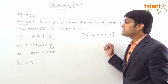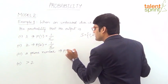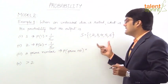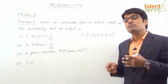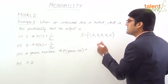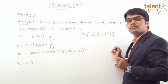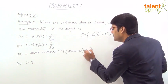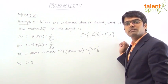Next, what is the probability that the output is a prime number? We look at the sample space to find how many outcomes favor this event. The prime numbers are 2, 3, and 5 — so there are 3 favorable outcomes out of a total of 6. The answer is 3/6, which equals 1/2.